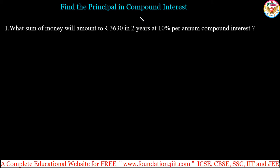Finding the principal in compound interest. Let us see a few problems based on how to find out the principal type questions. In the question you have to find out the P value from the given data. Here is the example: What sum of money will amount to 3630 in 2 years at 10 percent per annum compound interest?